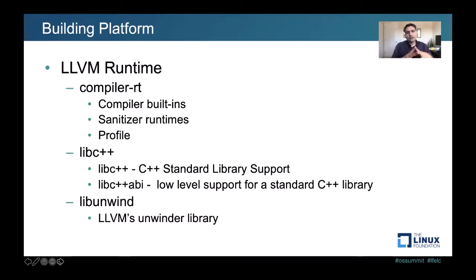Building a platform based upon Clang involves three things in addition to Clang Runtime, which is basically a compiler runtime similar to libgcc — providing initial initialization code, compiler built-ins as a library, and support for sanitizers. Libc++ is an effort for running the standard C++ runtime, analogous to libstdc++ in GNU toolchain. There's also libc++ABI for low-level ABI implementation, and a lib unwind library as well.